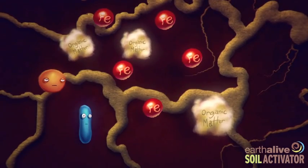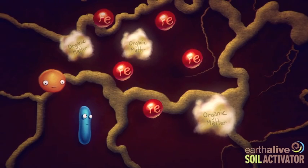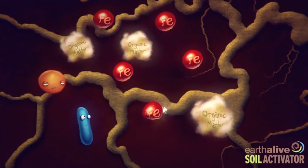It also produces siderophores, high-affinity iron chelating compounds that make iron available to the plant roots.